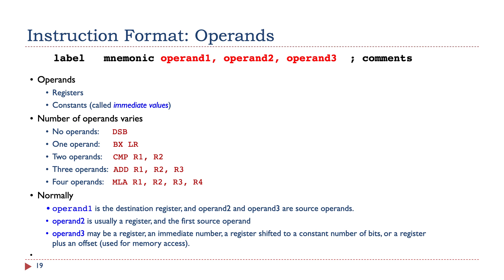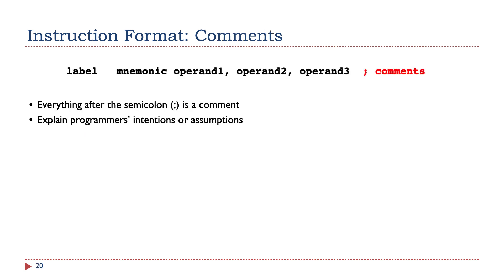Normally, operand one is the destination address. Operand two is usually a register and the first source operand. Operand three, however, can be a lot of things — it can be a register, an immediate number or constant, a register shifted by a constant number of bits, or a register plus an offset used for memory access. And then there's the comment. Everything after the semicolon is a comment. Use this to explain your intentions or assumptions in adding an instruction or a group of instructions.